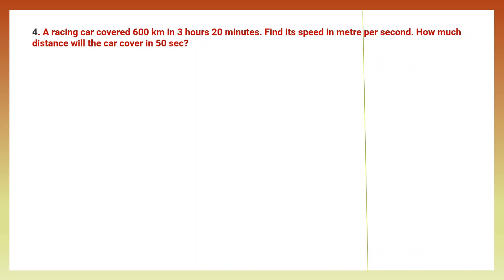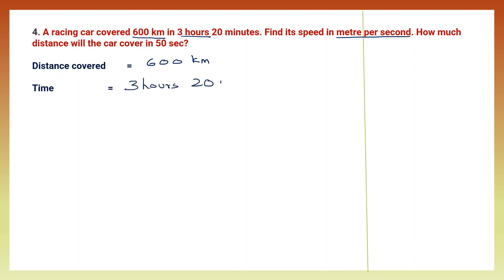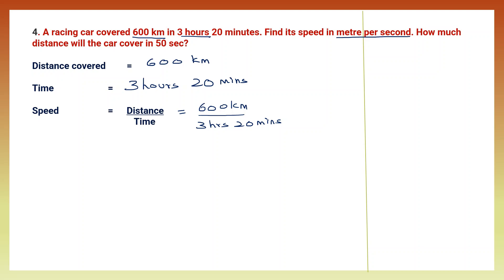Question 4. A racing car covered 600 kilometers in 3 hours 20 minutes. Find its speed in meters per second, and secondly, how much distance the car will cover in 50 seconds. The distance covered is 600 kilometers, and the time is 3 hours 20 minutes. Speed is distance by time. We've been asked to find in meters per second, so one kilometer has 1,000 meters, therefore 600 kilometers will be 600 into 1,000.